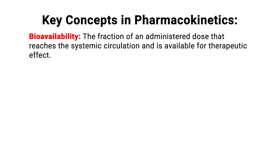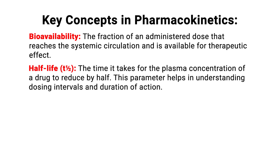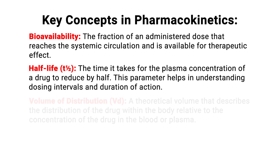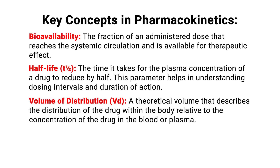Bioavailability: the fraction of an administered dose that reaches the systemic circulation and is available for therapeutic effect. Half-life: the time it takes for the plasma concentration of a drug to reduce by half. This parameter helps in understanding dosing intervals and duration of action. Volume of distribution: a theoretical volume that describes the distribution of the drug within the body relative to the concentration of the drug in the blood or plasma.